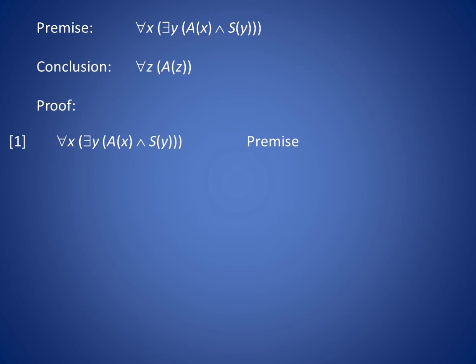We begin the proof by listing the premise for all x, there exists a y such that A of x and S of y. On line 2, we universally instantiate x to an arbitrary symbol c, resulting in there exists a y such that A of c and S of y.